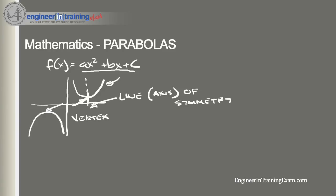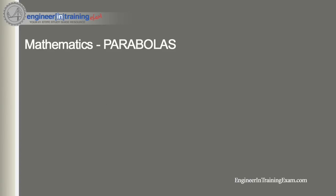There are two forms of equations that will give us a parabola. One of the forms is easier to graph than the other and easier to extract information from. However, the second form that we will be going over is more common. There is a little bit more work to be done if we're asked to find certain information like the vertex, but not much more. Let's first go over the first form.